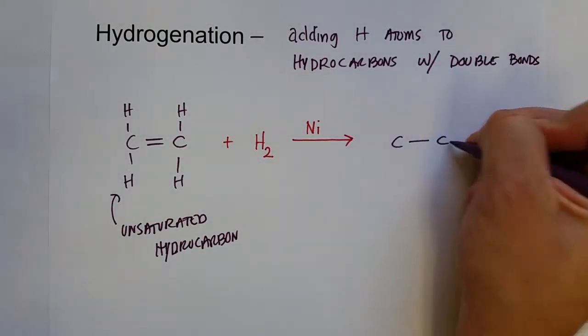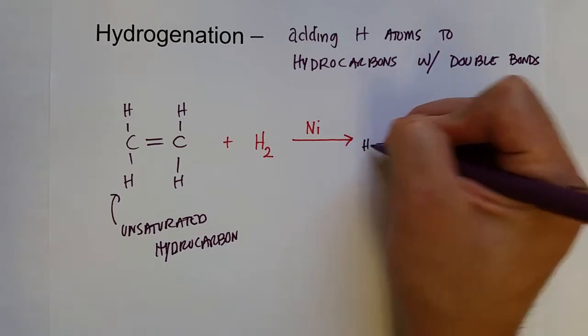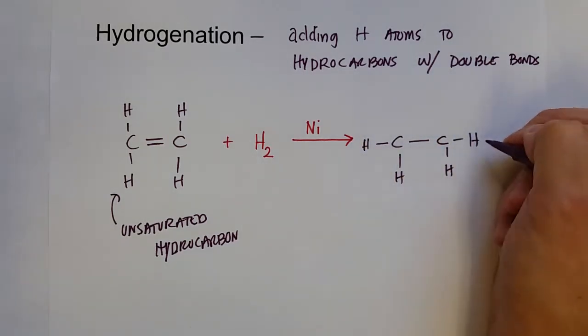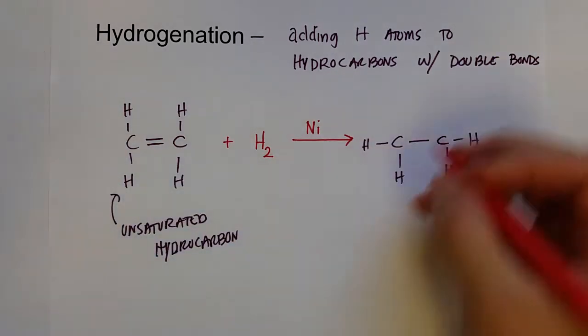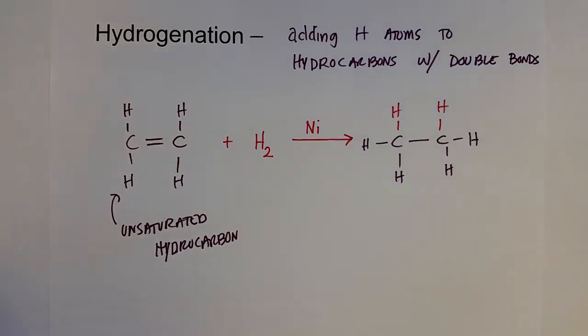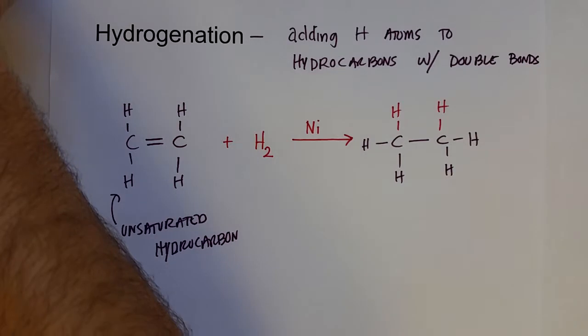And so instead of the double bond, we've got a single bond between each carbon atom, and those two hydrogen atoms were added. So the hydrogenation reaction adds hydrogens onto double bonds, or where the double bonds used to be.